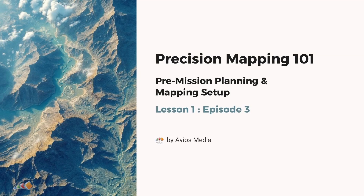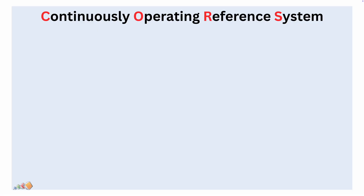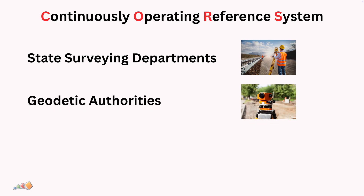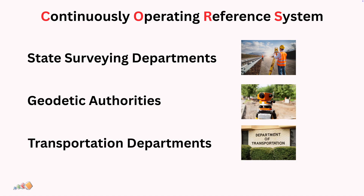Hello and welcome back to lesson one, episode three. Now it's time to find a local CORS provider, which we will be using to obtain high accuracy mapping using RTK corrections. CORS services are usually offered by state surveying departments, geodetic authorities, or transportation departments.